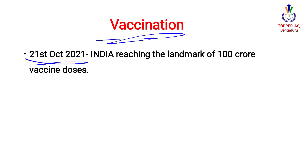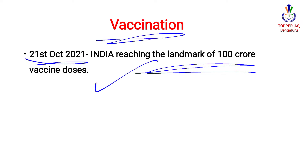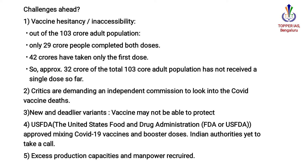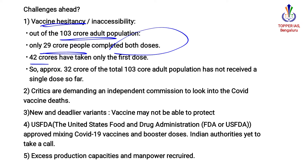Vaccination: on 21st October 2021, India reached the landmark of 100 crore vaccine doses. However, this vaccination drive has many challenges. First is vaccine hesitancy or inaccessibility. Out of the adult population, only 29 crore people completed both doses, 42 crore people took only the first dose, and 32 crore people did not take any vaccine.